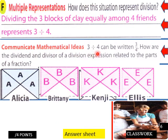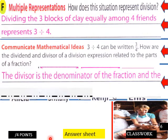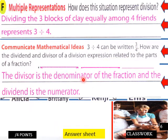Communicating mathematical ideas. Three divided by four can be written three over four. How are the dividend and divisor of a division expression related to the parts of a fraction? So that's a good question. The divisor is the denominator. So here would be your divisor. And the dividend is the numerator. So we have three divided by four.